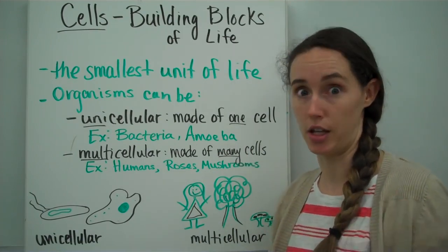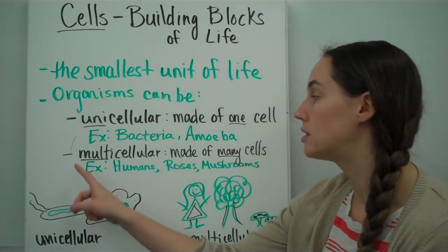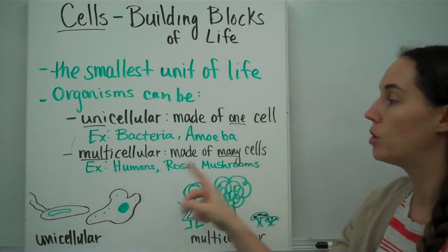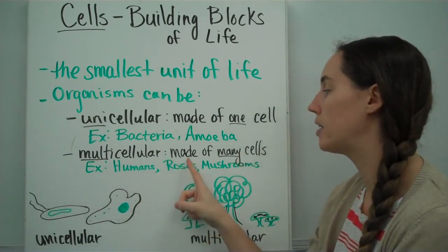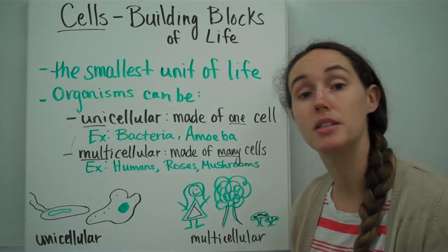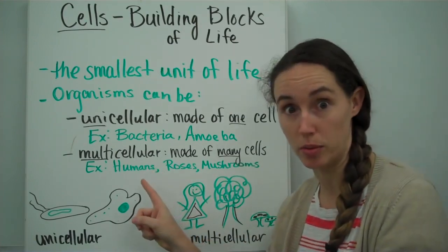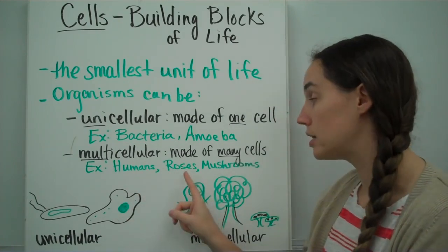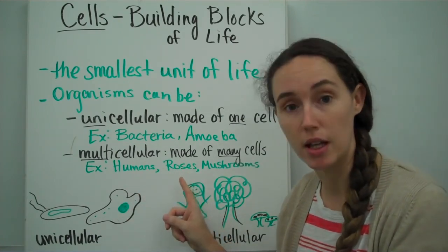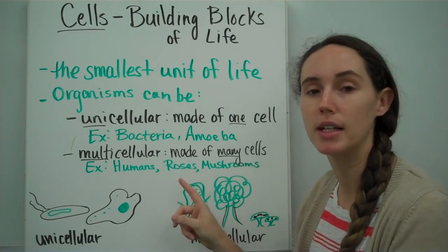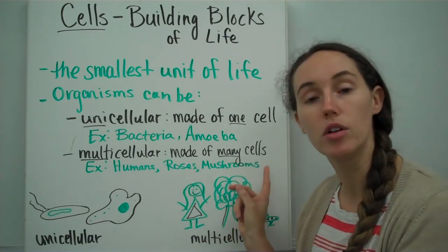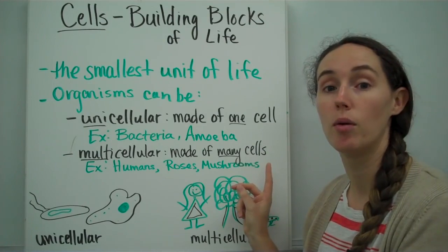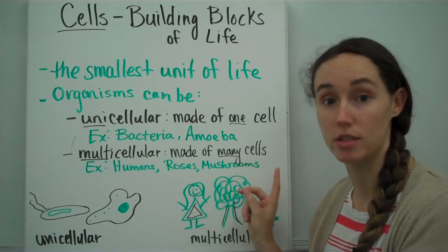Other organisms, like you and me, are multicellular. Multi means many, so multicellular organisms are made of many cells. Some examples of these are humans, you and me, and all the animals, roses — which is an example of a plant — so roses and all plants, and then mushrooms and all your other fungi, are made of many cells. We are multicellular.